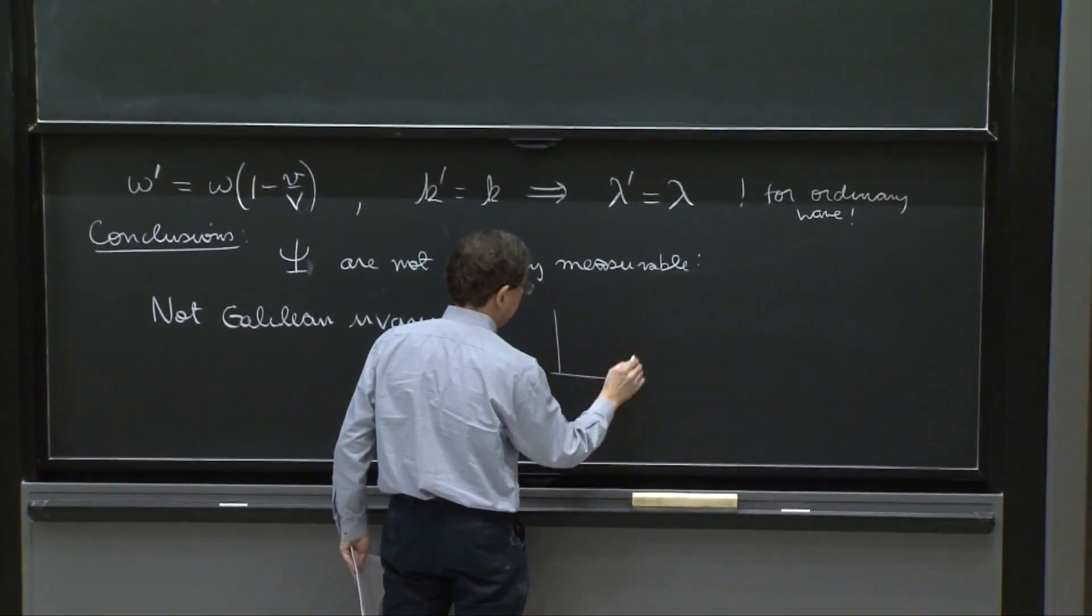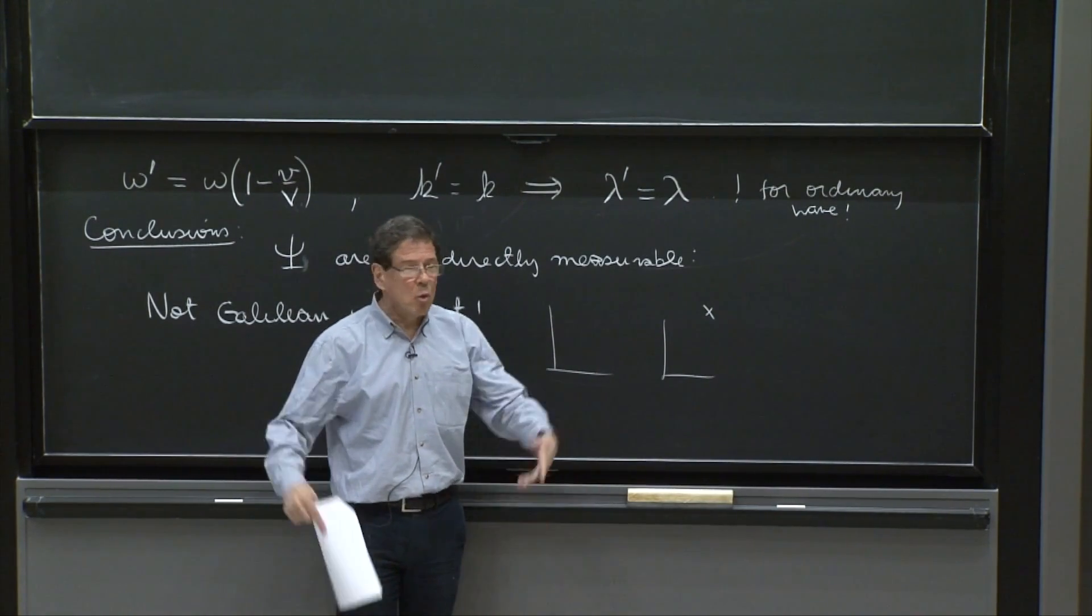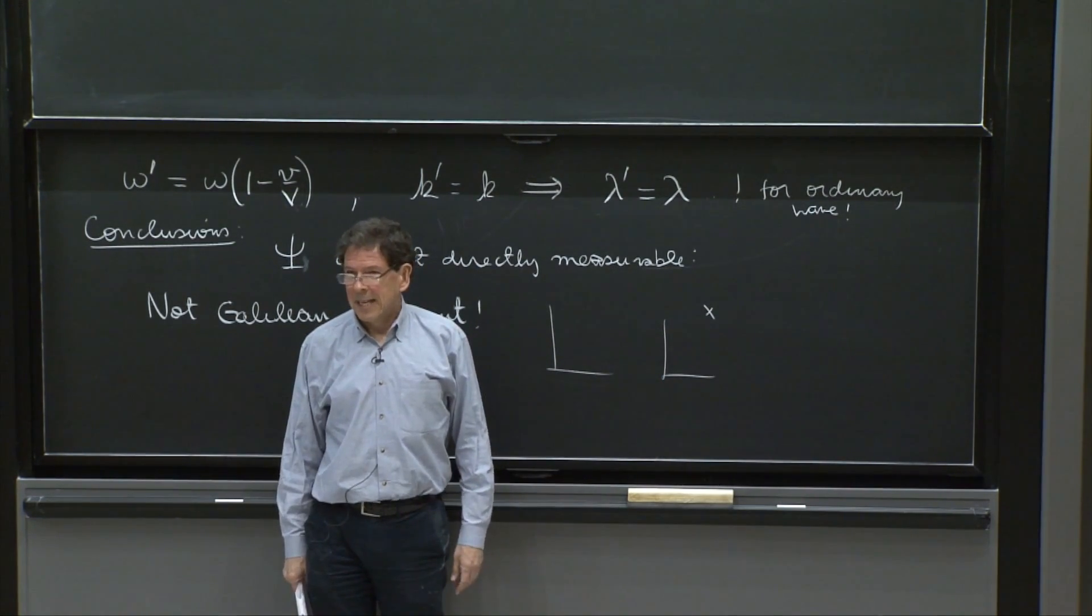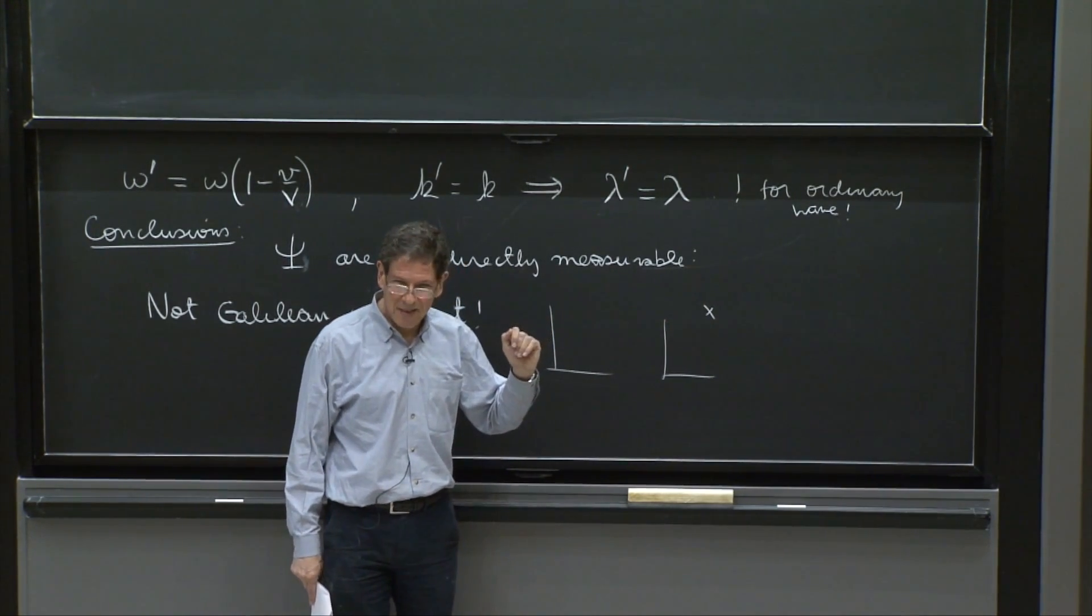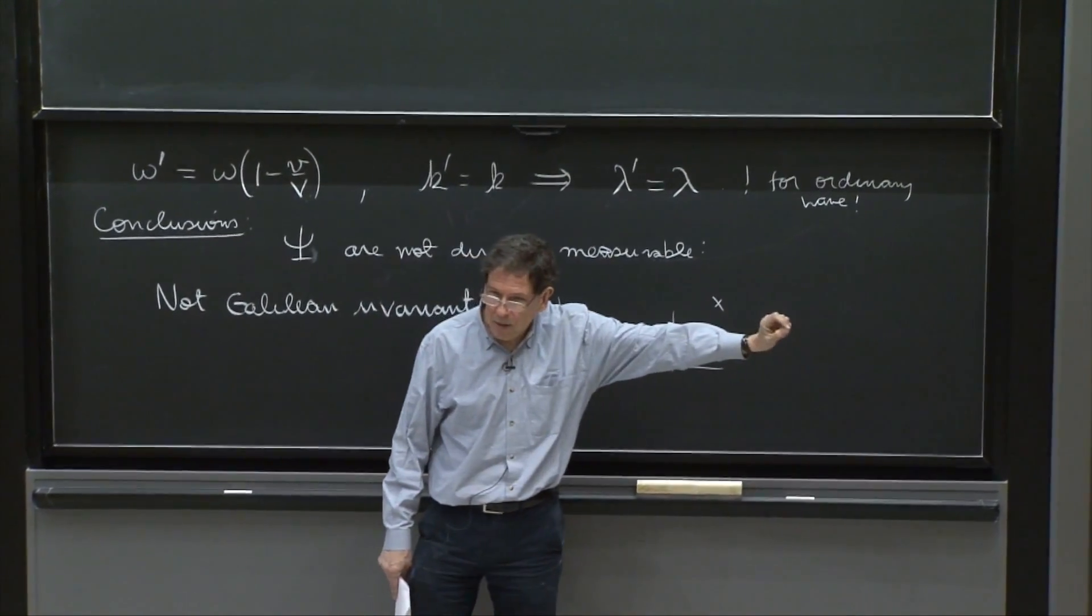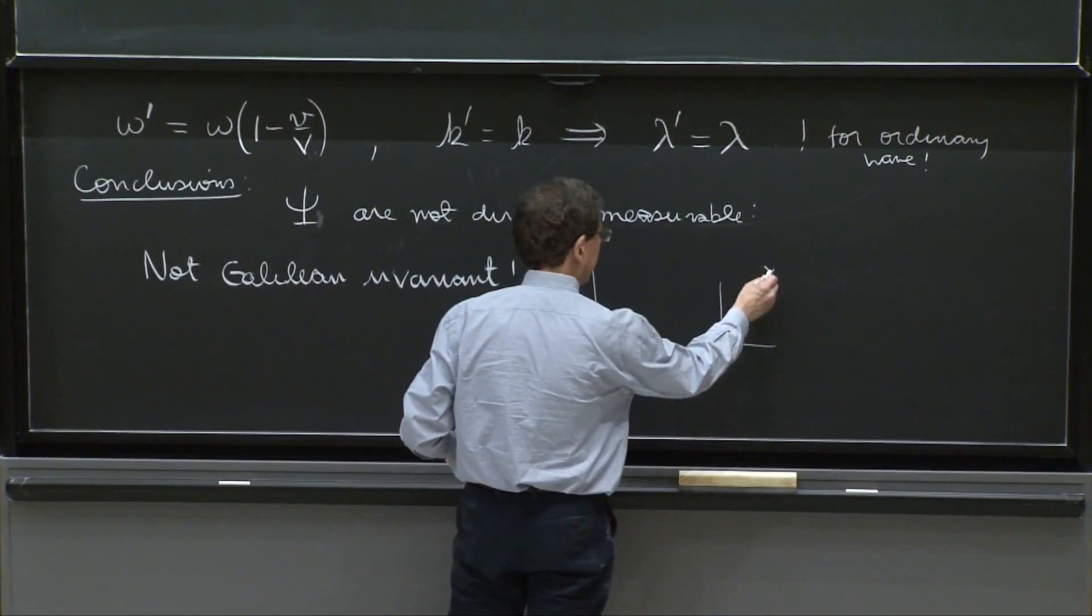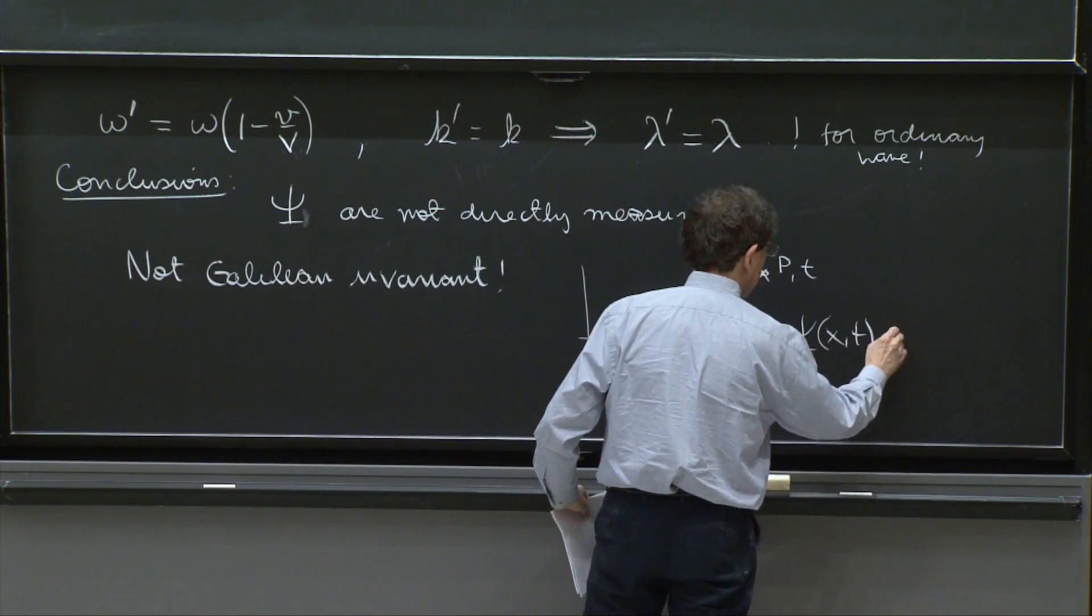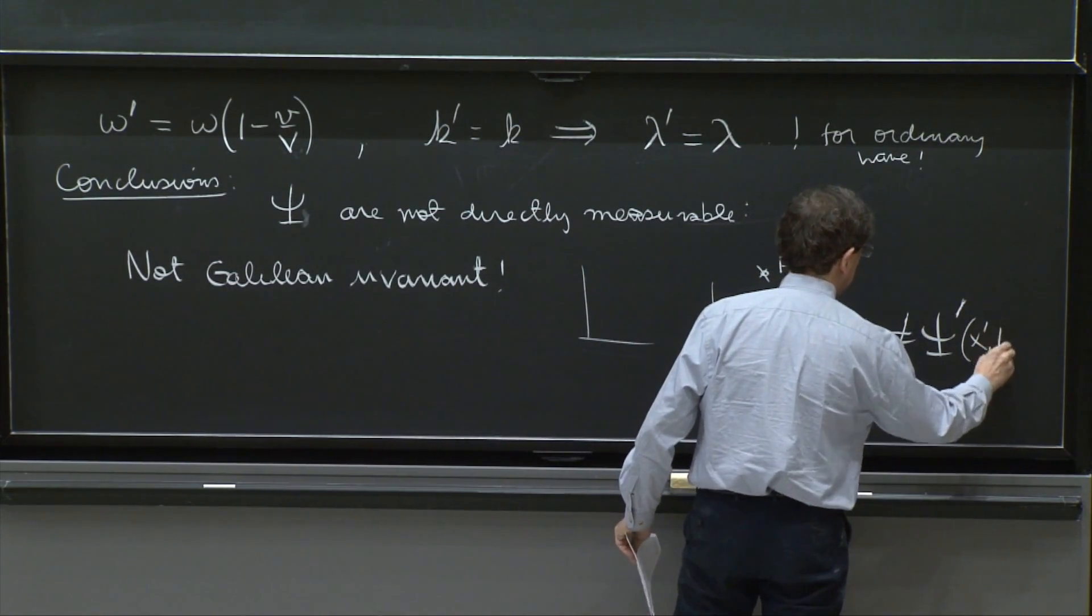And what does that mean? That if you have two people, and you ask, what is the value of the wave function here, the two observers might give you a different complex number for the wave function. They will just not agree. Not all is lost. Because you will find how their measurements can be compared. That will be the task of the problem.